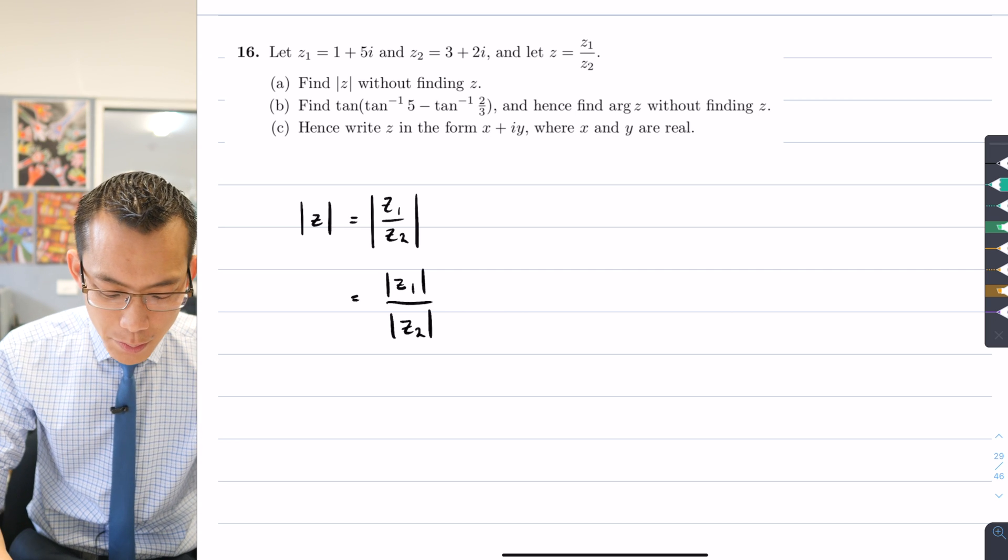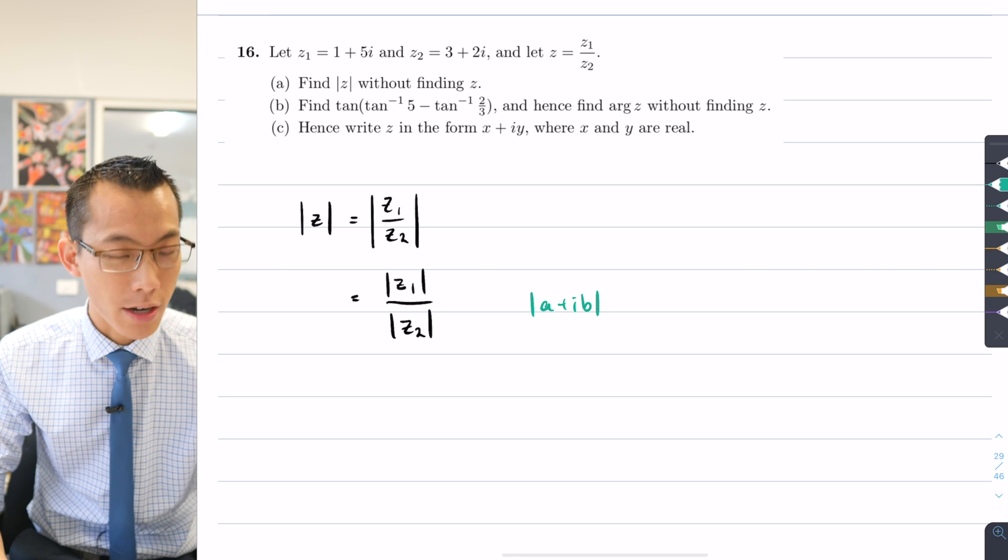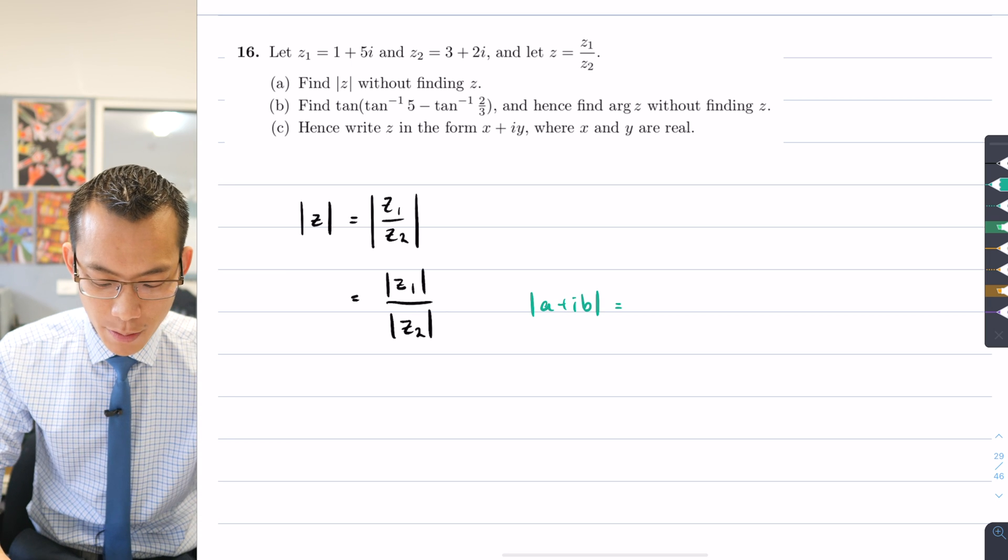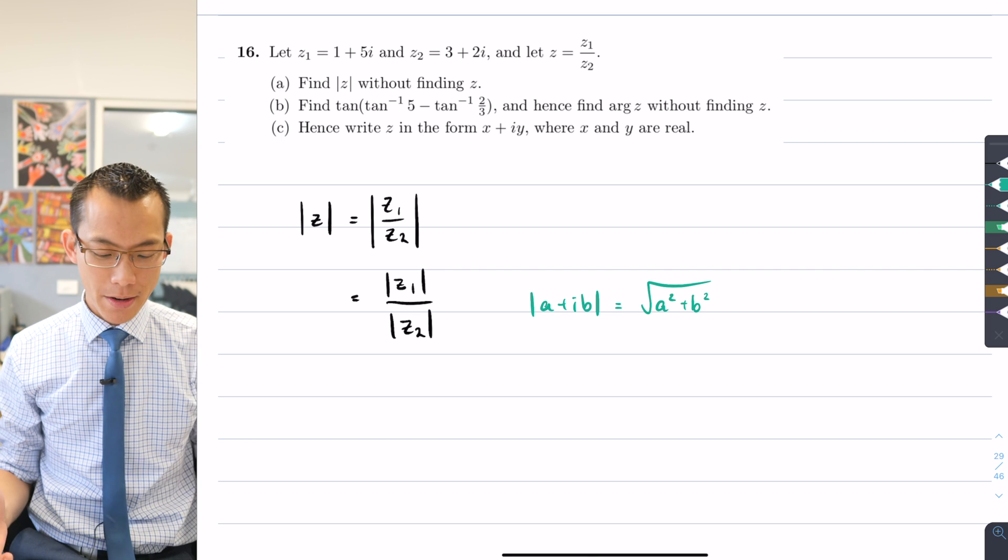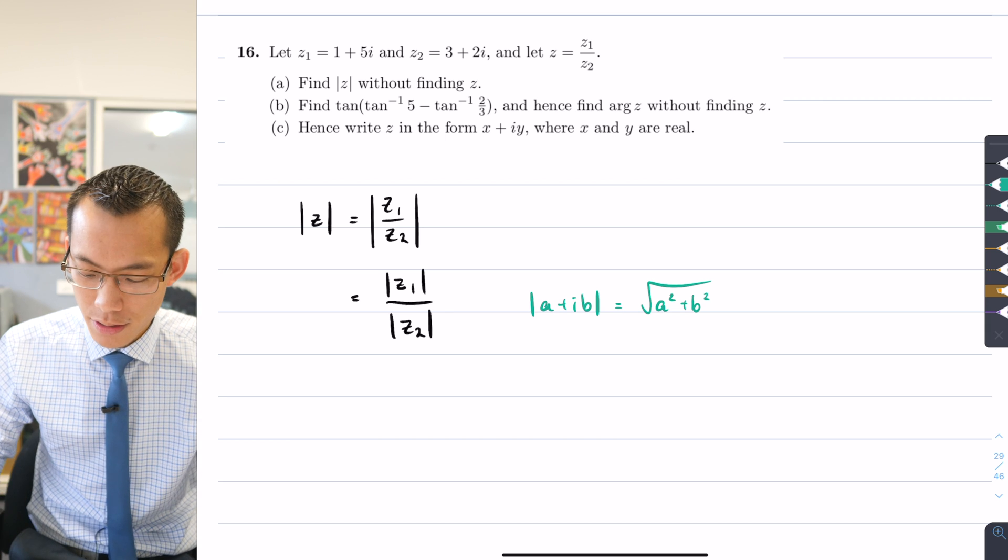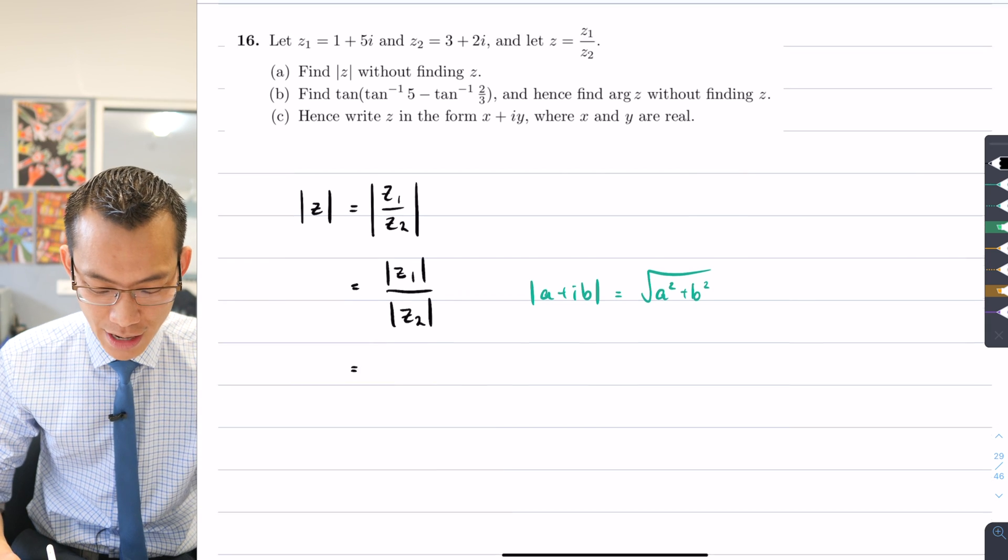So just to remind you, the absolute value of a plus ib for some arbitrary complex number is going to be the square root of a squared plus b squared. The modulus is like the c, it's the hypotenuse. So let's go ahead and do that with these particular z1 and z2.